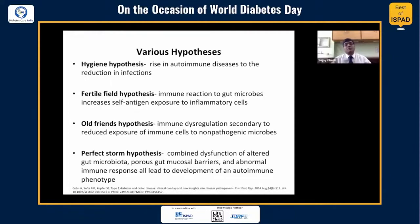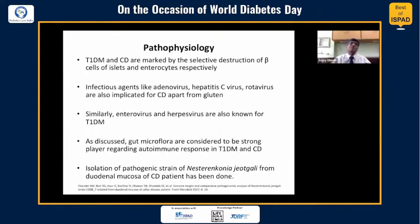There have been several hypotheses for both type 1 diabetes which also hold good for celiac — the hygiene hypothesis, the fertile field hypothesis, the old field hypothesis, and the perfect storm hypothesis. Both groups have these postulated hypotheses for the mechanism explaining the coexistence of celiac with type 1 diabetes.